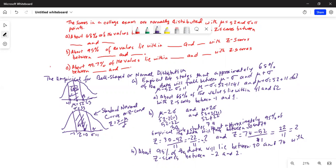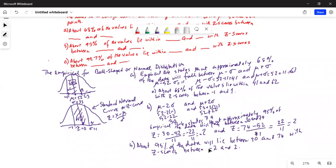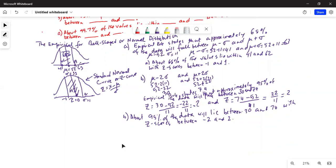So we have to create some more space to answer part 3. Part C. Mu minus 3 sigma is 52 minus 3 times 11 is 33 and mu plus 3 sigma is 52 plus 33. 52 minus 33 is 19 and 52 plus 33 is 85.